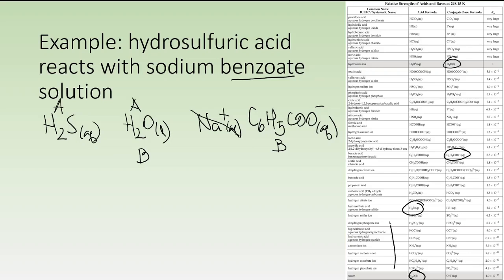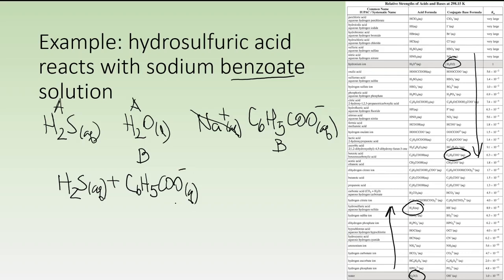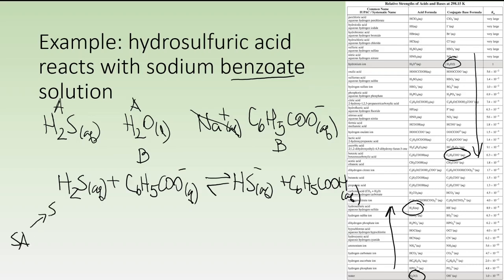We find the strongest acid — the one farthest up on the table — as the first reactant, and the strongest base — the one farthest down — as the other reactant. Transferring a proton between them, using either technique, we predict hydrogen sulfide ion and benzoic acid as products. In terms of extent of reaction, the strongest acid is in a position of weakness compared to the strongest base, so the reaction is reactant-favored — less than 50% conversion.